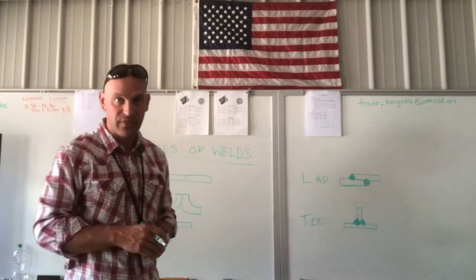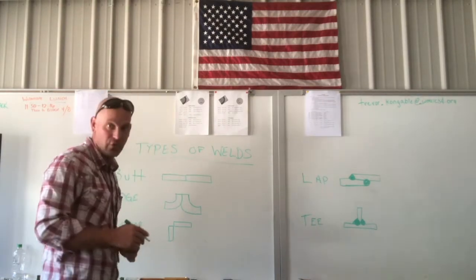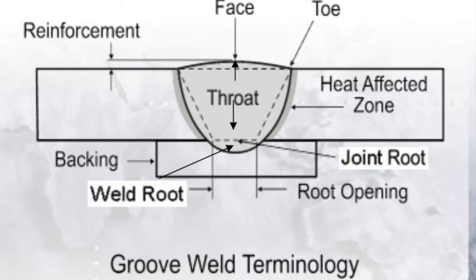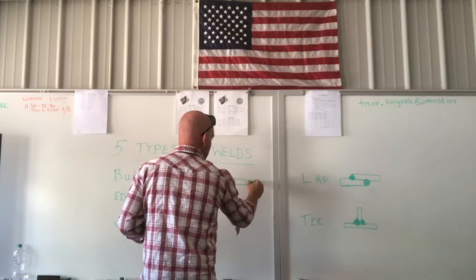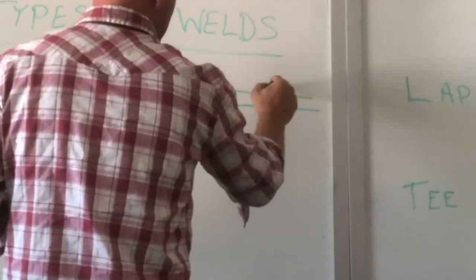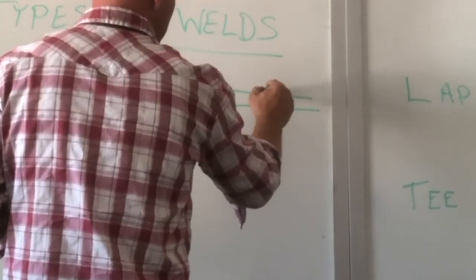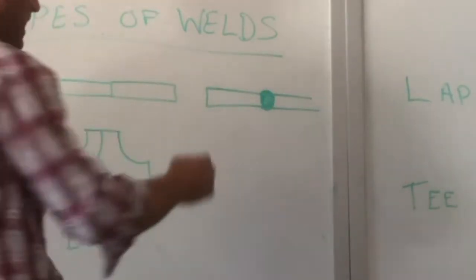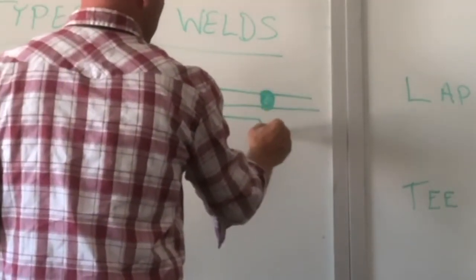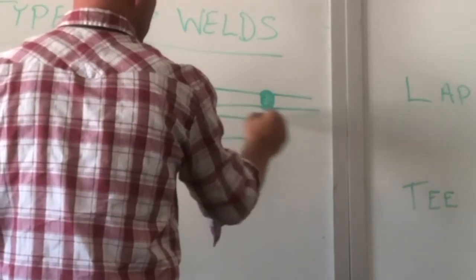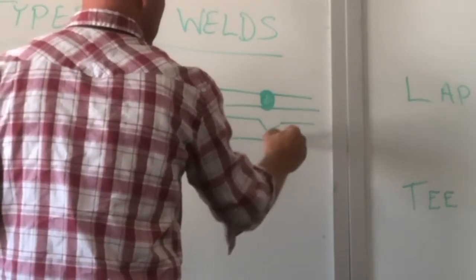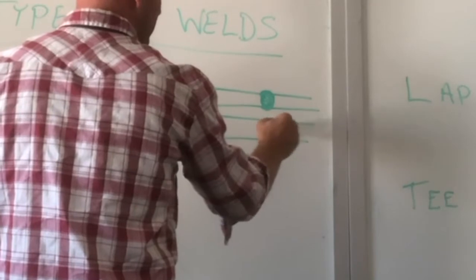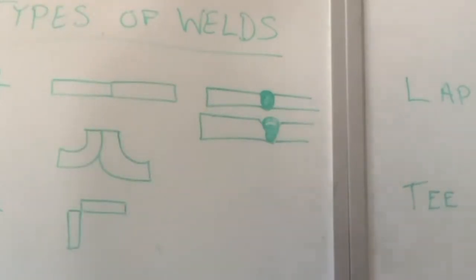The other thing we do is a groove weld. So if we have two pieces that don't touch each other and we have a gap, this is a groove weld where we're going to weld those together. Or we might have a certain bevel. That also would be a groove weld.